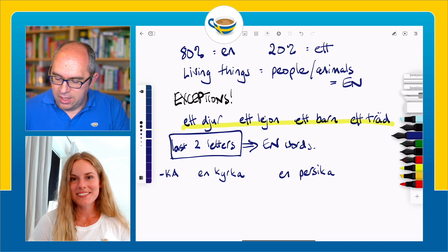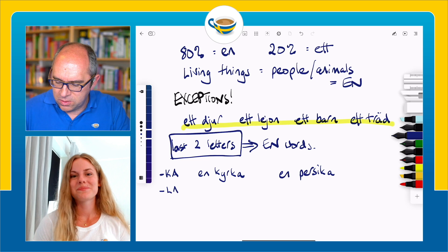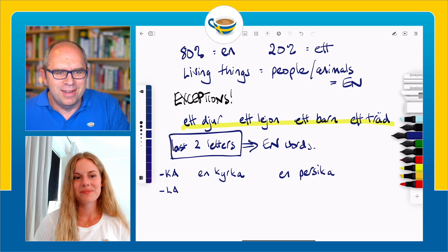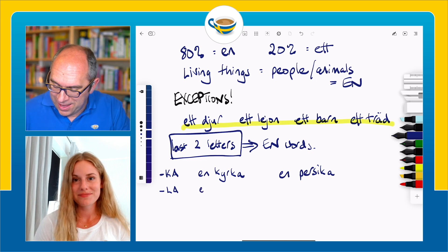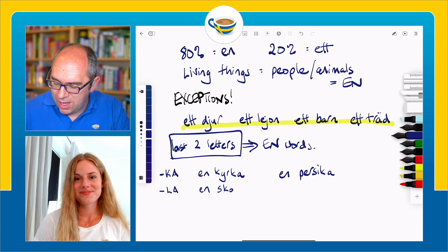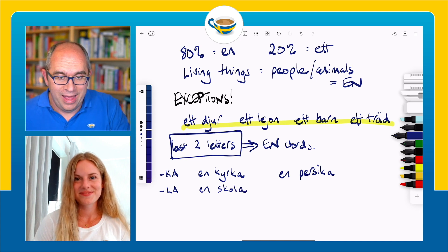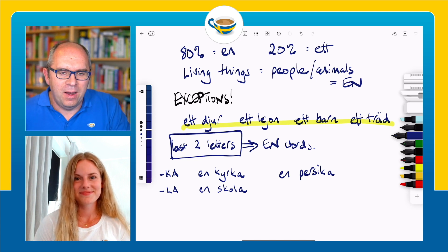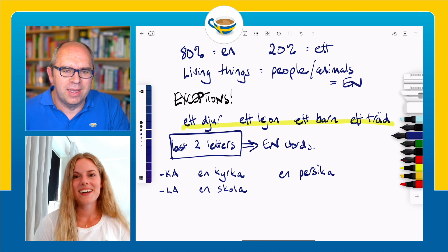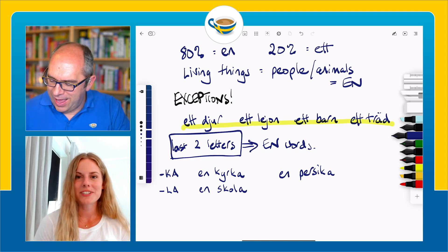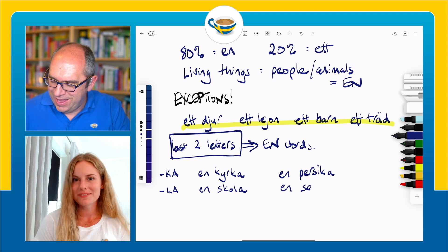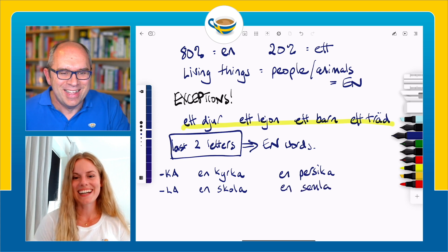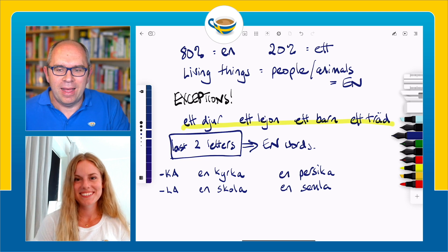We also have L-A. So we have the word skola, which we've come across before — 'a school' — en skola. Another n-word ending in -la. And we also have en semla, which is a very traditional pastry — the one with the cream on top. So en semla ends in -la.